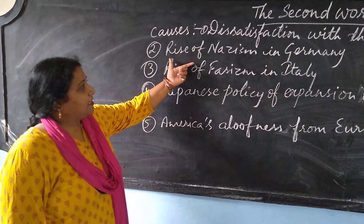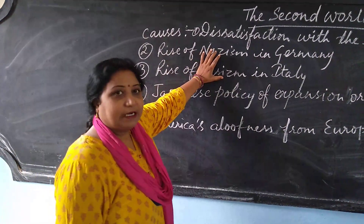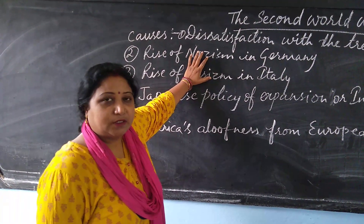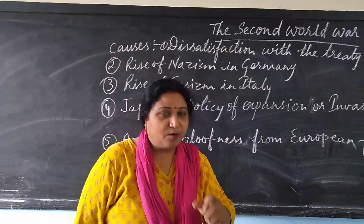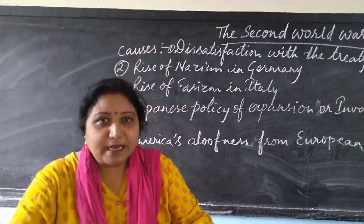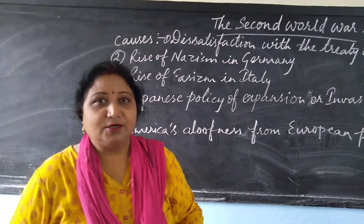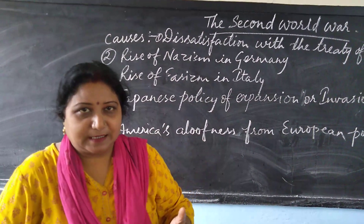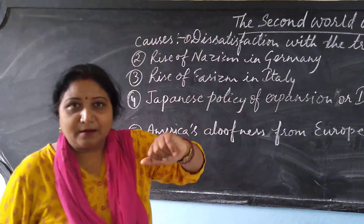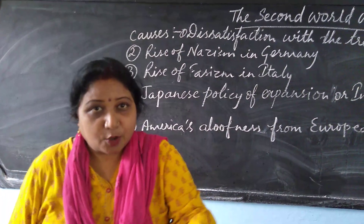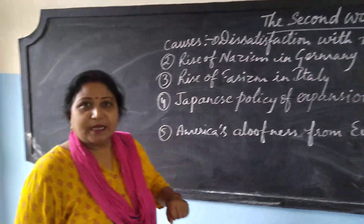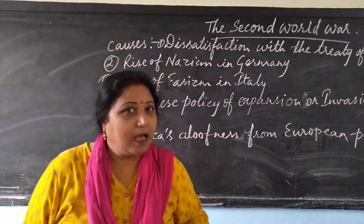The next cause: rise of fascism. Dictatorial forms of government were established, and they adopted aggressive policy. Aggressive policy means to capture more and more countries and territories. Germany captured Rhineland, Austria, Sudetenland, and Czechoslovakia. In the same manner, Italy also adopted aggressive policy and captured Abyssinia and Albania.